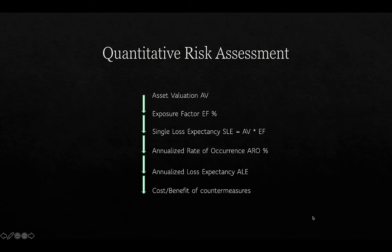In a quantitative risk assessment, we start with evaluation of the asset — we need to know how much the asset costs. Then for every threat acting on a vulnerability, we work out the exposure factor: what percentage of that valuation would be impacted. From that, we calculate the single loss expectancy — what the loss would be if a single event occurred. We then work out how often it's going to happen, which is the annualized rate of occurrence, and from that we can calculate the annualized loss expectancy. Once we understand how much we're likely to lose every year from this risk, we can prioritize spending on countermeasures.